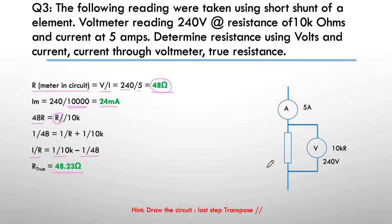With the 10k voltmeter method it came out at 48 ohms, but when we actually worked it out it was actually 48.23 ohms. So the true value of this resistor is 48.23 ohms.